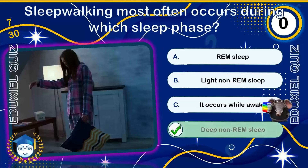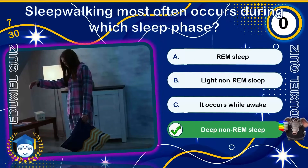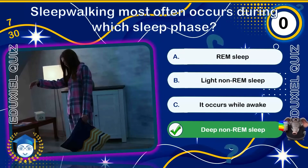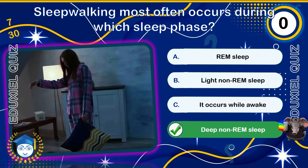Deep non-REM sleep, also called slow-wave sleep, is the most restorative stage of sleep. It is characterized by delta brain waves and is crucial for memory consolidation and tissue repair. Growth hormone release peaks during this stage.